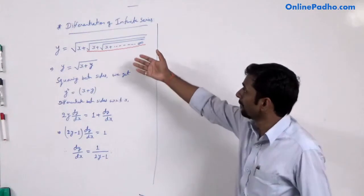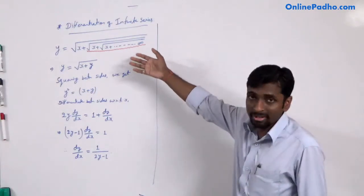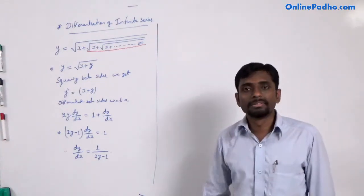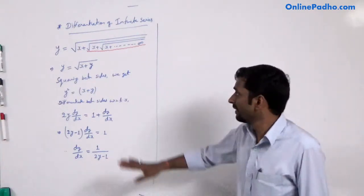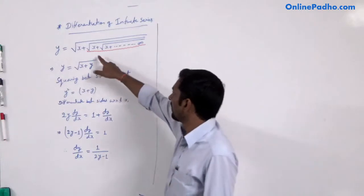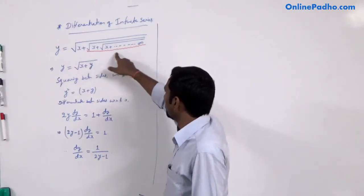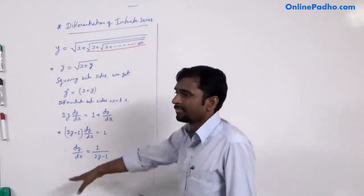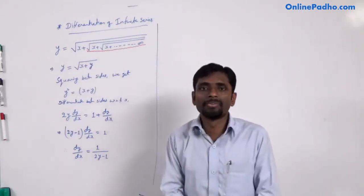By this way, we can simplify each and every infinite function. First, we have to simplify — we have to eliminate the infinite series — and then we can differentiate this type of function.